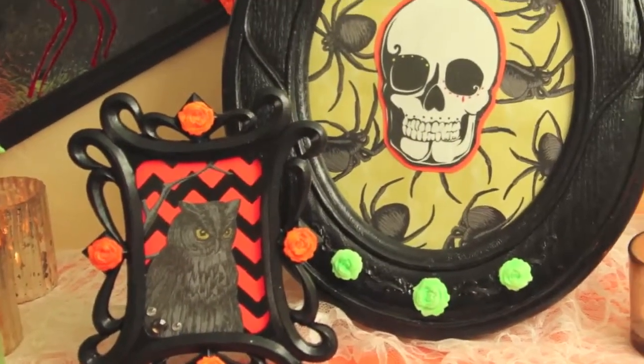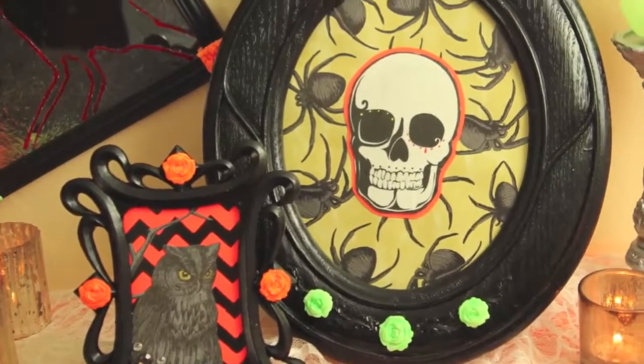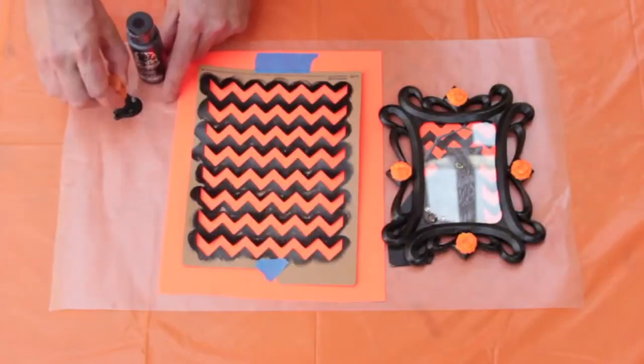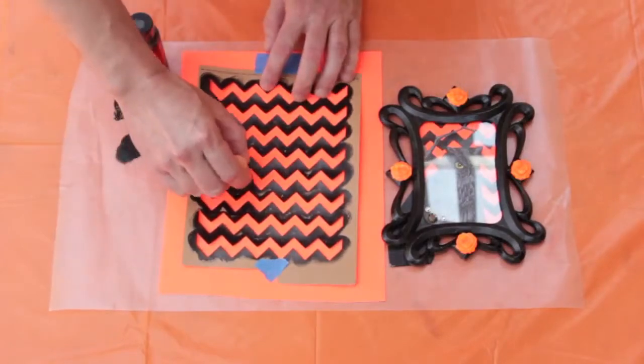Our thrift store frames were painted with black folk art paint and embellished with neon mod melt roses. The background was stenciled to create a chevron pattern with folk art stencils.